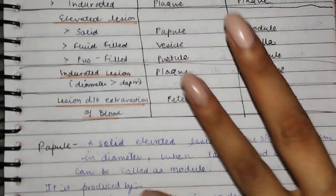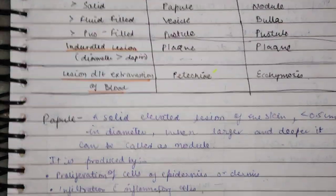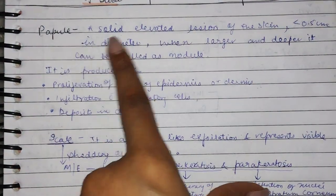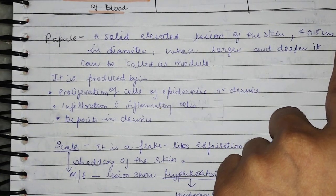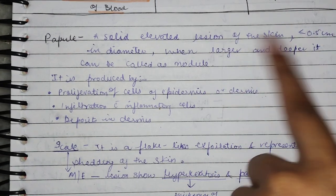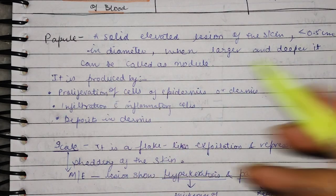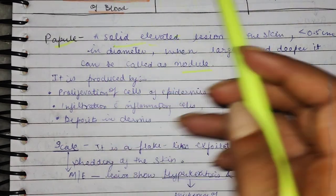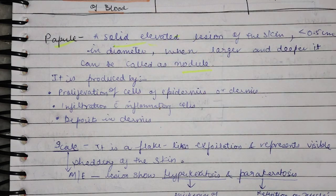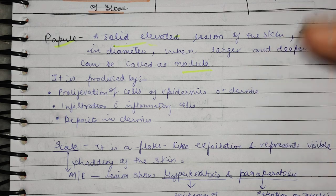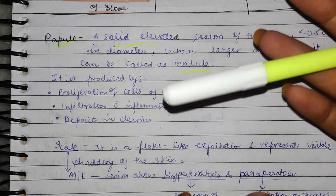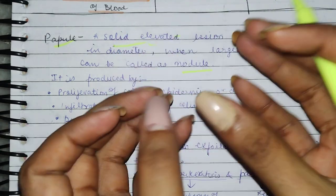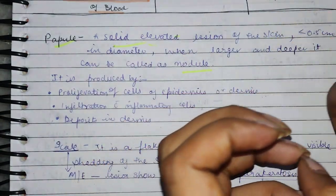And if it is bigger, then we have a nodule. So papule is a solid elevated lesion of the skin, less than 0.5 cm in diameter. When larger and deeper, it can be called a nodule. Now, papule is a solid elevated lesion of the skin — it is a papulosquamous disorder. So we will know how papules become. There is a lot of proliferation of cells.